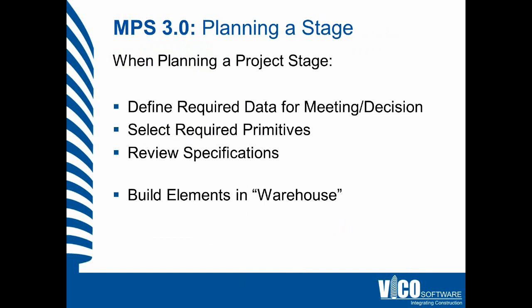With MPS 3.0, when you plan a stage, you first define the required data needed for the meeting or decision at the end of that stage. Then you select the required primitives and review the specifications you've put together in those primitives. Primitives become your standard — that is what you provide as a guidebook, a set of guidelines for development of your building information models.